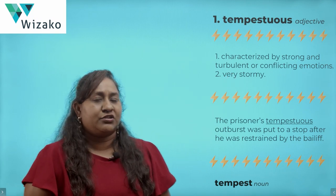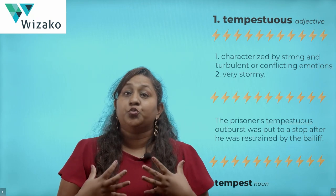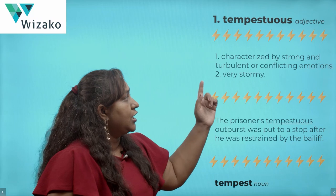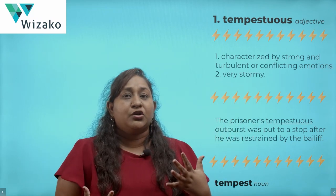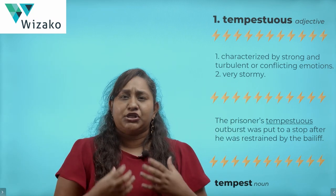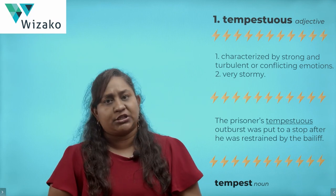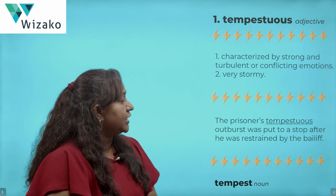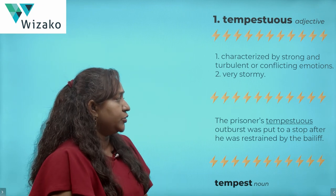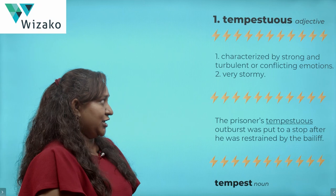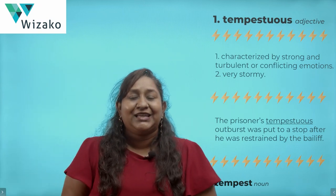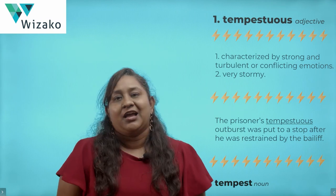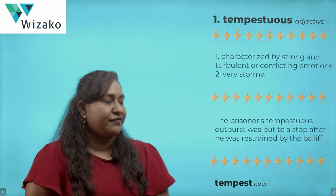Quite often, something like the storm is associated with emotions as well. So tempestuous can also be used to refer to someone who is feeling very conflicted and feeling very strong, turbulent emotions. Here's tempestuous in an example sentence: the prisoner's tempestuous outburst was put to a stop after he was restrained by the bailiff — meaning it was a strong emotional outburst finally stopped by the bailiff.